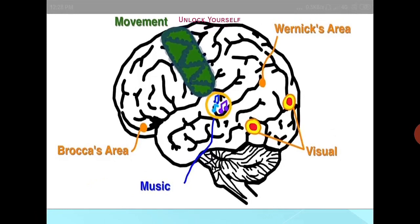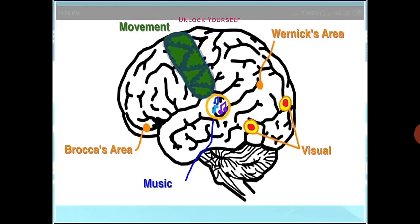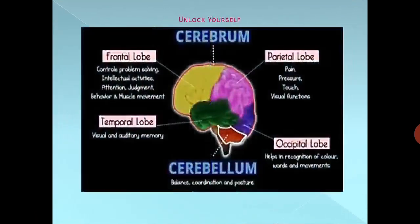The frontal lobes in general are associated with reasoning, planning, parts of speech, movement, emotions, and problem solving. So the frontal lobe controls problem solving, intellectual activities, attention, judgment, and muscle movement.